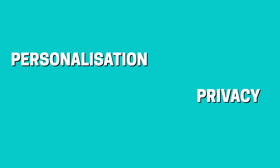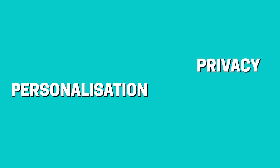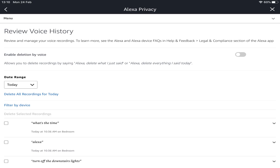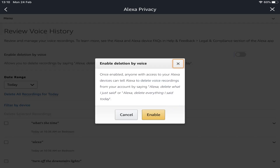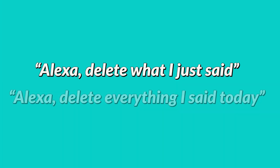As ever with devices of this type, there's a balance to be drawn between personalisation and privacy. By default, deletion by voice is disabled, but moving this slider to the on position and subsequently selecting Enable will allow you to perform future deletions purely by voice — and therefore without the need to access the app — with spoken commands including 'delete what I just said' and 'delete everything I said today'.